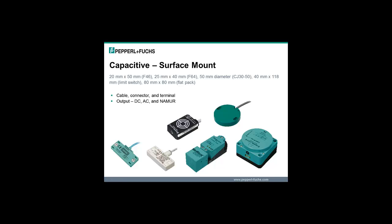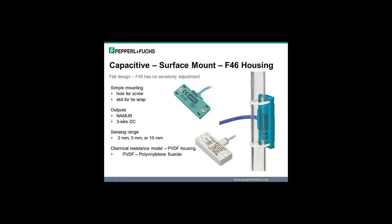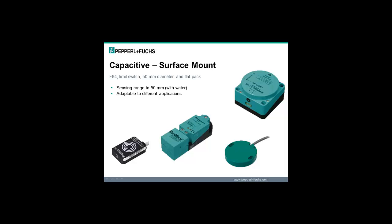The different housing types that are available are F46, which is 20 mm by 50 mm, F64, which is 25 mm by 40 mm, CJ30-50, which is a 50 mm diameter, standard limit switch size of 40 mm by 118 mm and standard flat back size of 80 mm by 80 mm. With the F46 housing, you can mount using the screw hole or slots with a tie wrap. You can use the tie wrap if the F46 needs to be attached to a sight glass for level control. The F46 has no sensitivity adjustment but is available in 2 mm, 5 mm and 10 mm sensing ranges. There is also a PVDF housing that is more resistant to some chemicals. The F64, limit switch, 50 mm diameter and flat pack are very adaptable to solve different level applications.